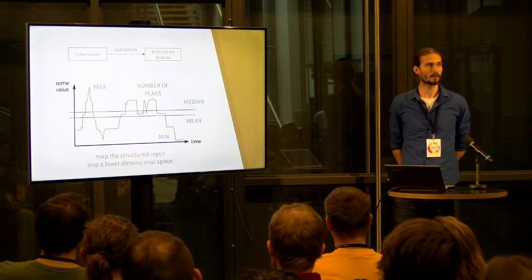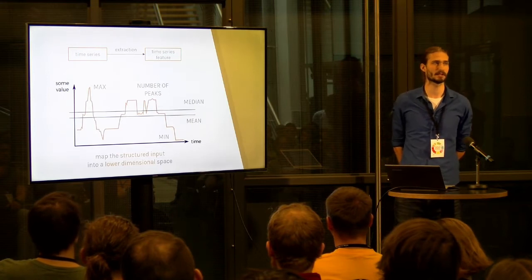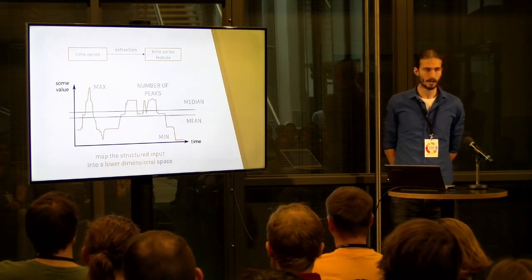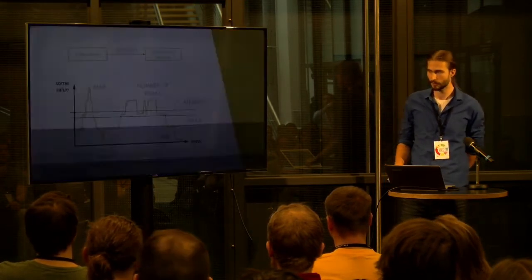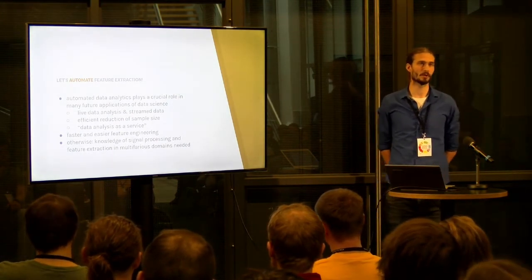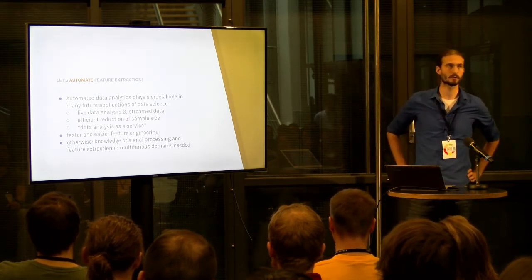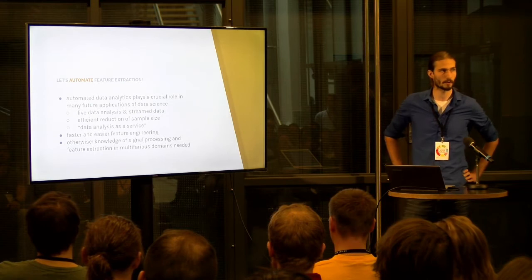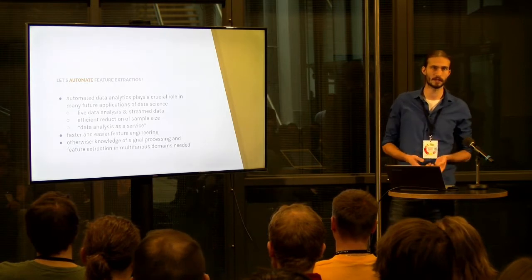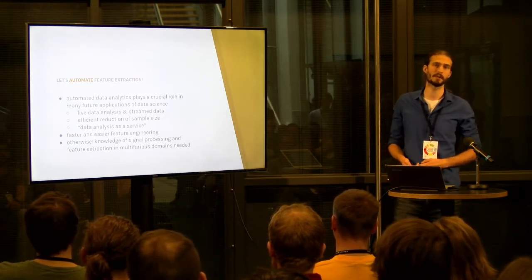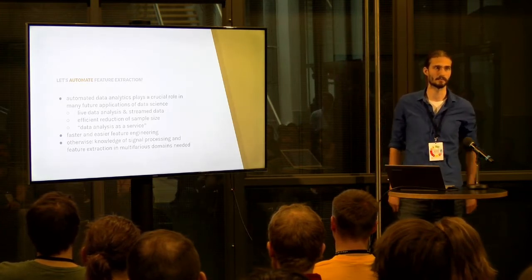With these features, we can now feed our machine learning model and then predict the target we want. The next step is, of course, automating our feature extraction. Automating feature extraction will not only lead to a faster and easier feature engineering process, but you also do not need knowledge of other signal processing libraries. You only need your domain-specific knowledge and rely on others with domain-specific knowledge in other domains who have already implemented the correct features.